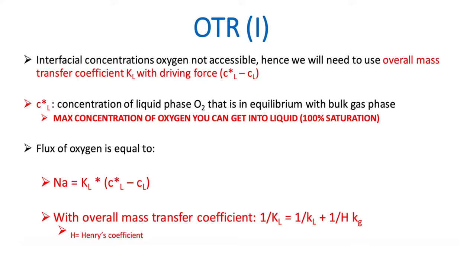The C*L is related to the concentration of liquid phase oxygen in equilibrium with the bulk gas phase. If this is not provided, you can also look at the solubility. If you have 100% saturation, your maximum concentration of oxygen available within the reactor is actually the maximum solubility at a certain temperature or pressure.